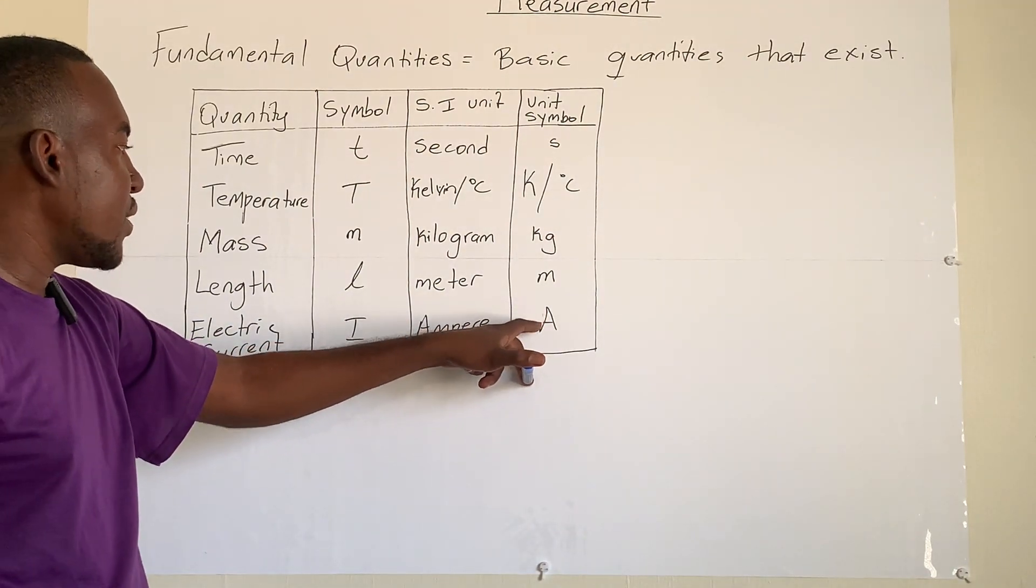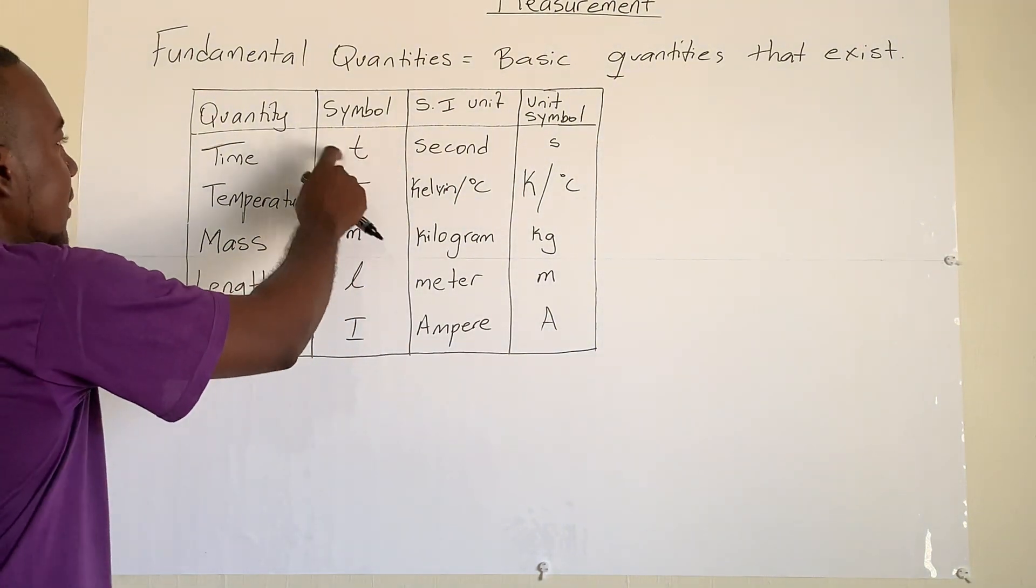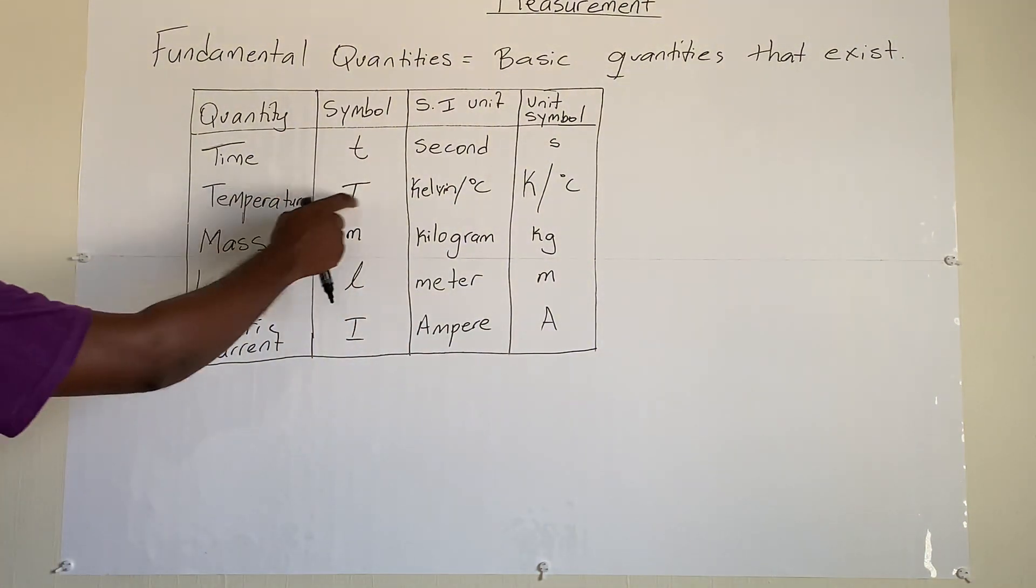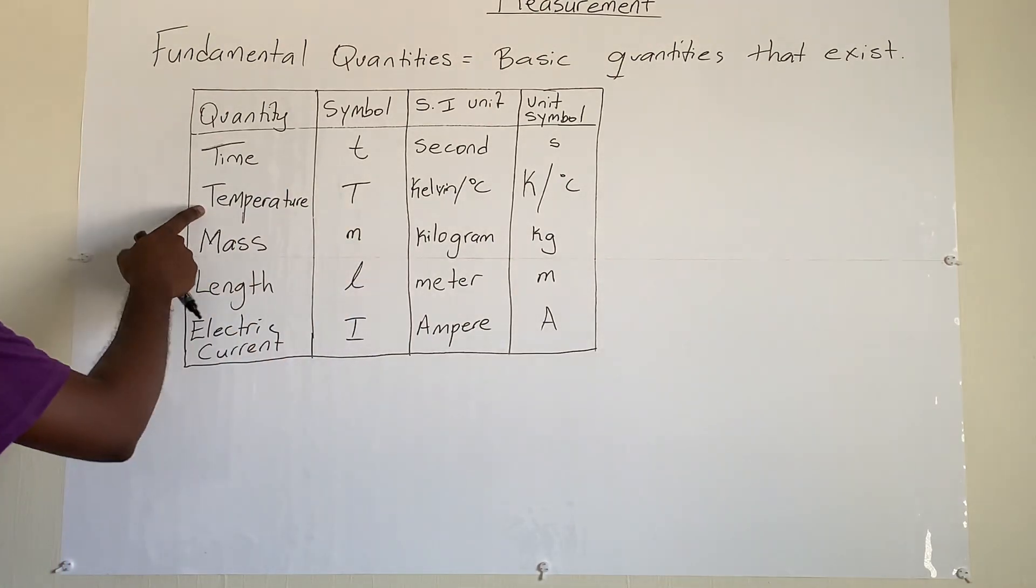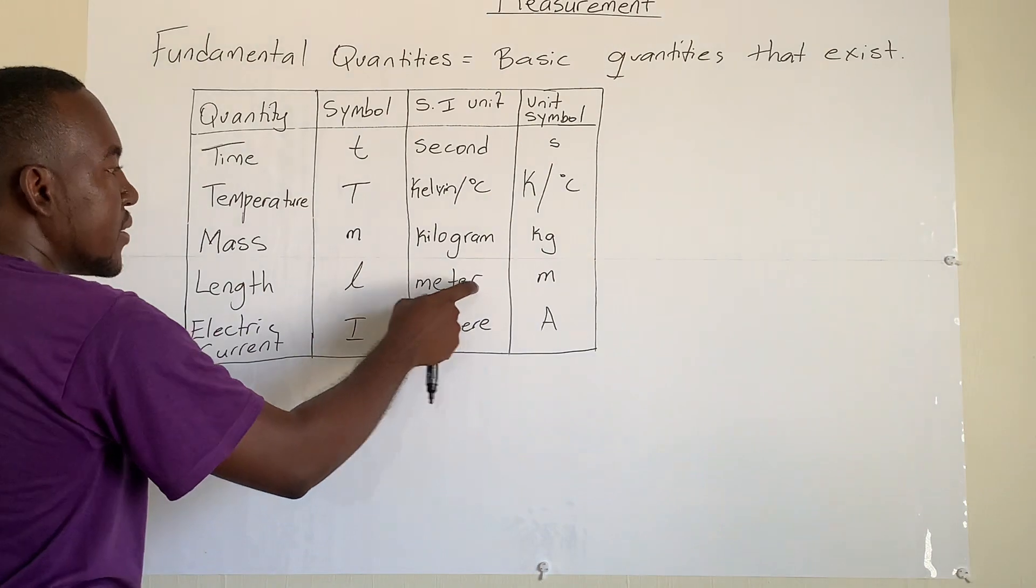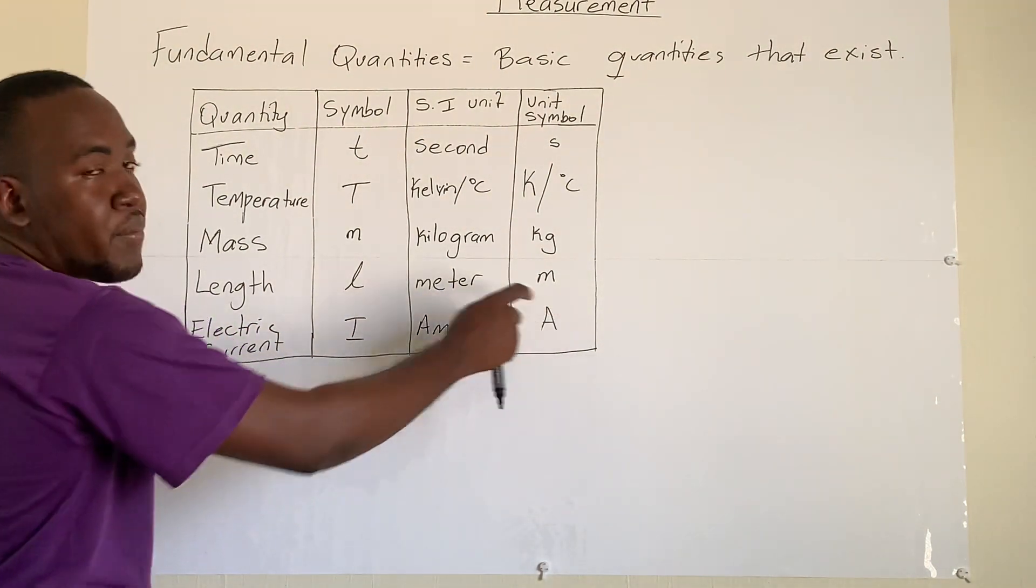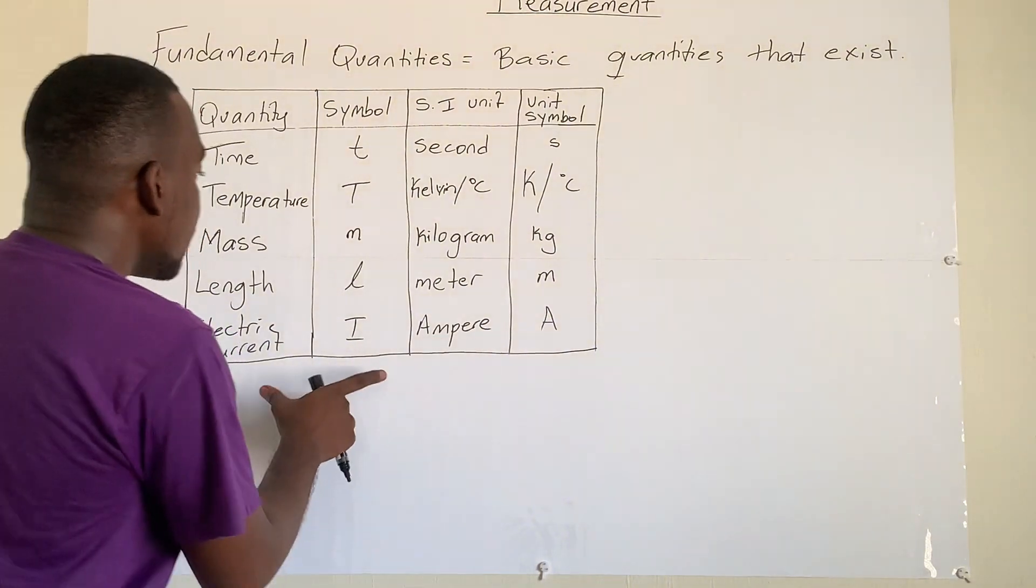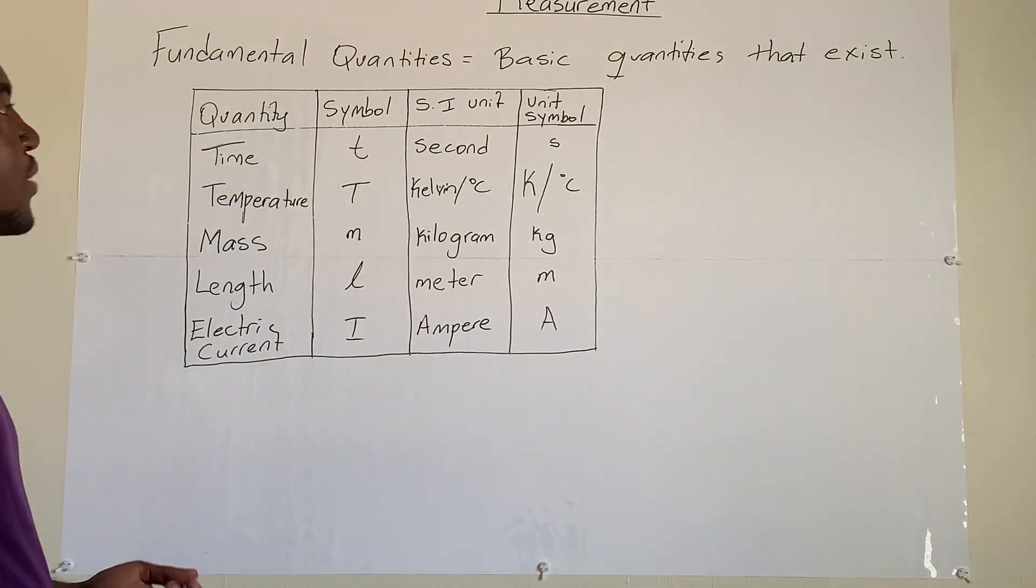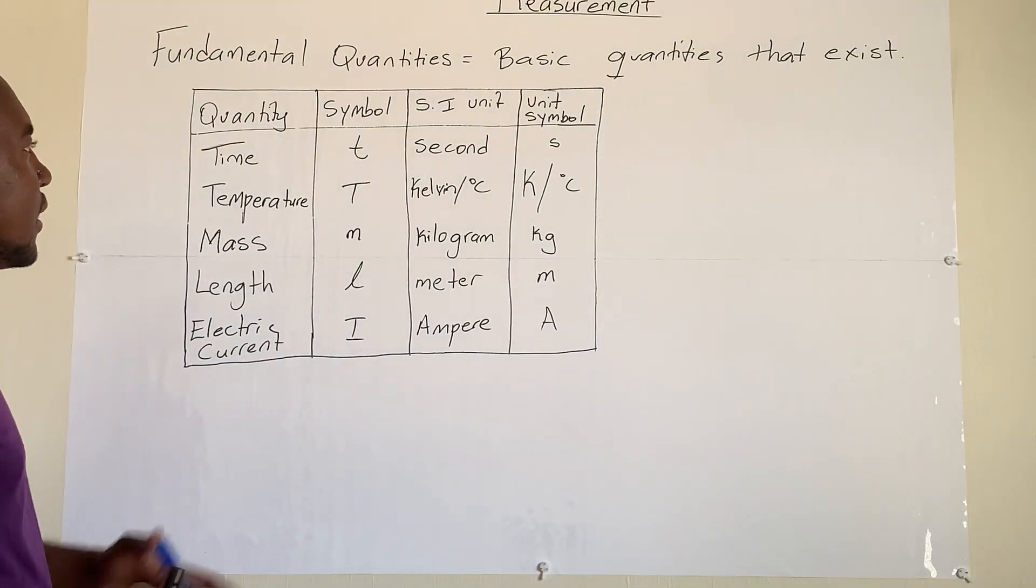Please pay attention to the case as well. Notice, this is a common t which represents time. If you use capital T, that represents temperature. For units, common m for meters, not a capital M. Amperes, it's capital A, not a common a. So these are the units that we will use frequently in our classes.